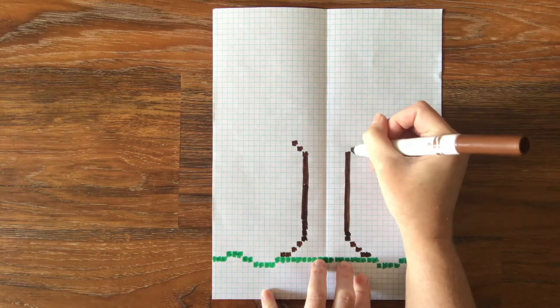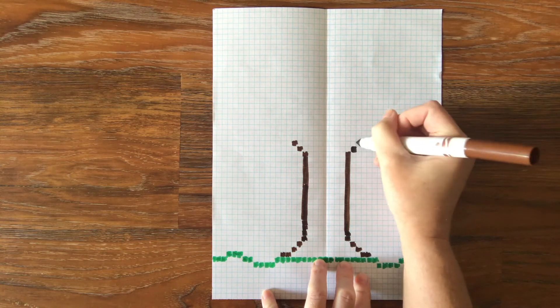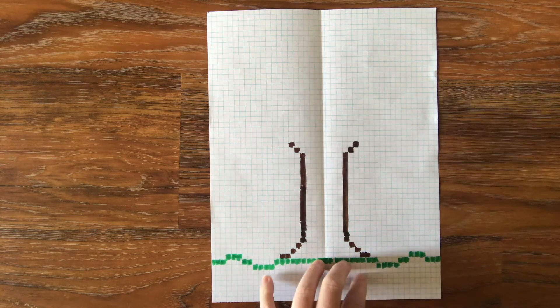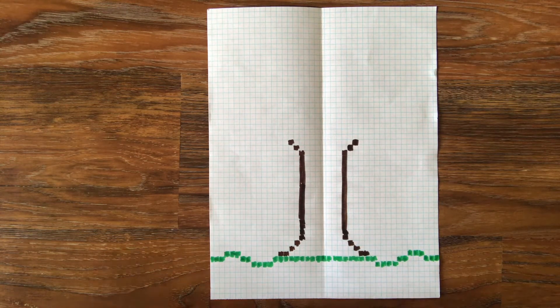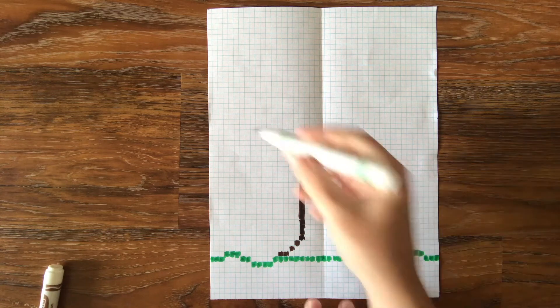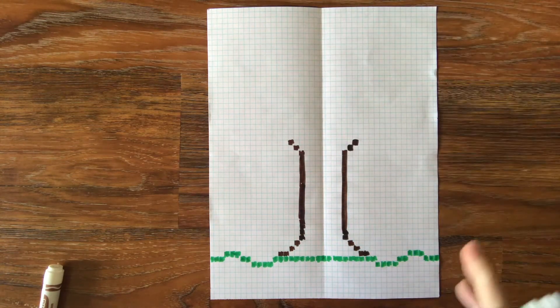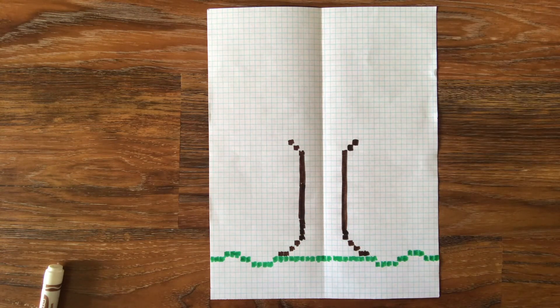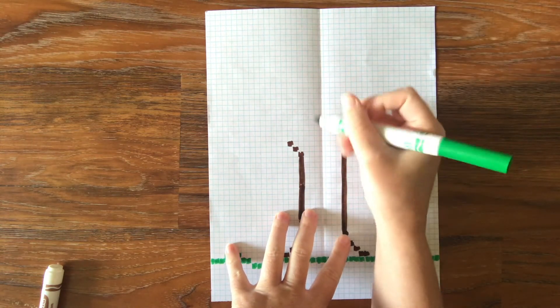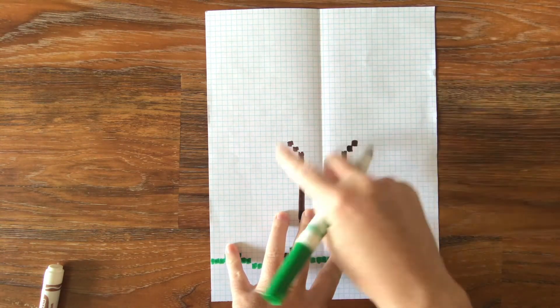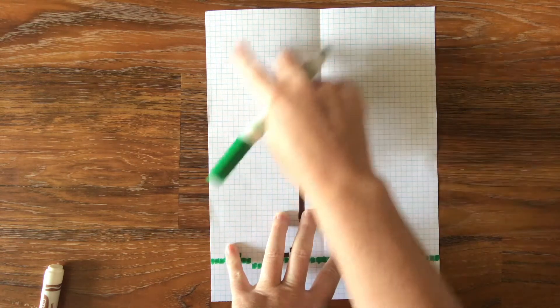And then one, two, going out at a diagonal. Okay. Now I'm going to do some kind of tree top. I'm going to again start on this half. I think what I'm going to do is start kind of where my trunk left off and then just kind of fill.